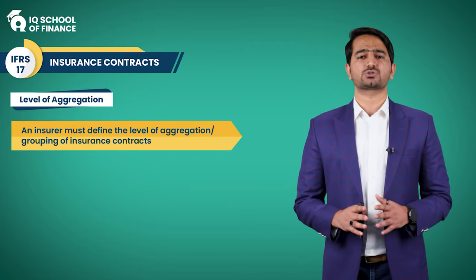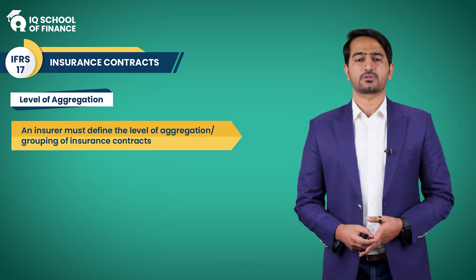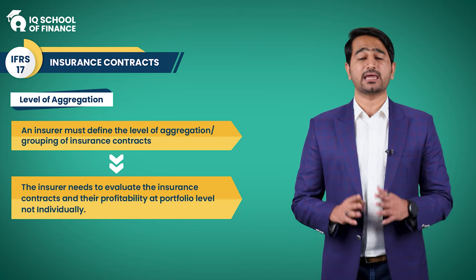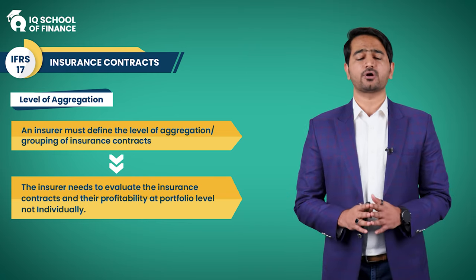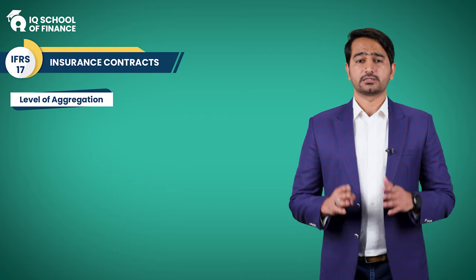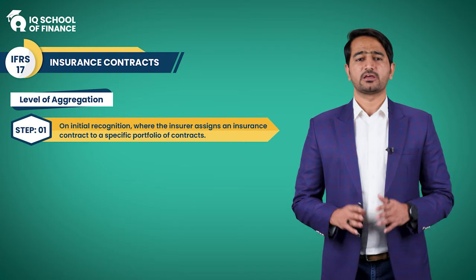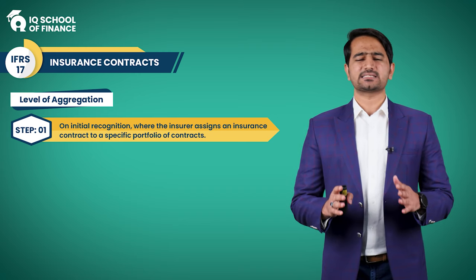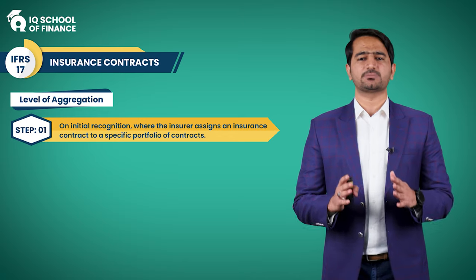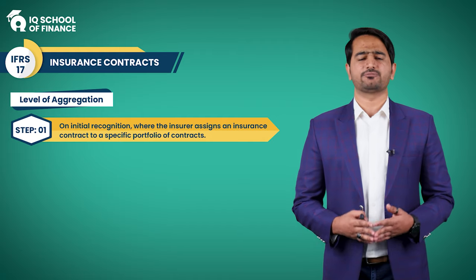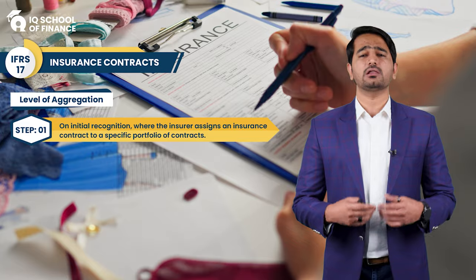Let's delve into grouping and aggregation. An insurer must define the level of aggregation of insurance contracts, evaluating profitability at portfolio level based on groups of contracts, not individual contracts. This process has three steps. In step 1, upon initial recognition, the insurer assigns each insurance contract to a specific portfolio — a larger grouping sharing similar risks managed together — such as vehicle insurance, property insurance, or life insurance contracts.